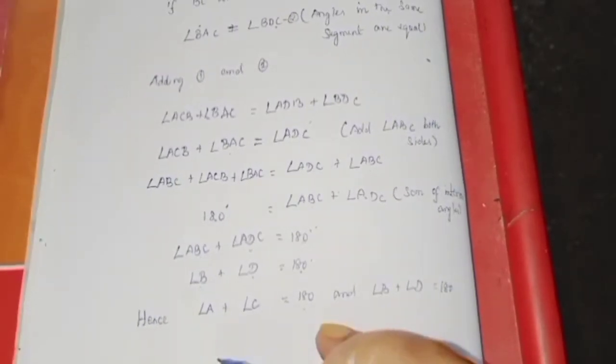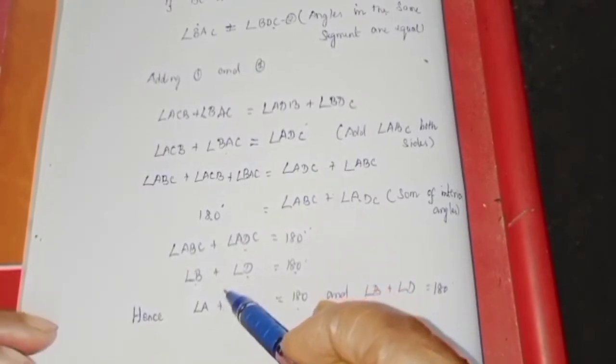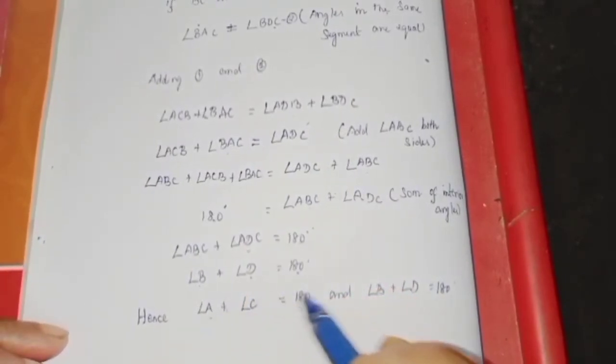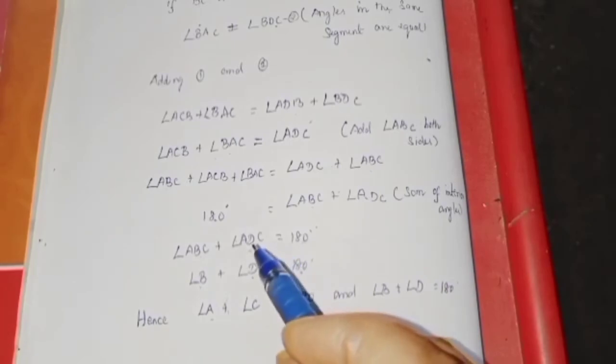So the sum of either pair of opposite angles of the cyclic quadrilateral is 180 degrees. Hence proved.